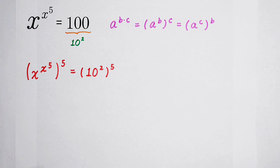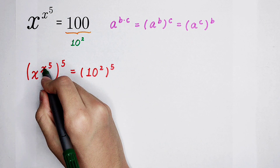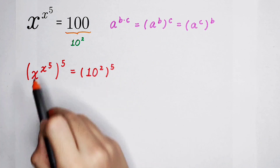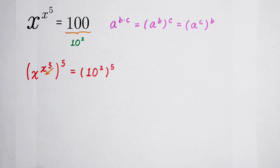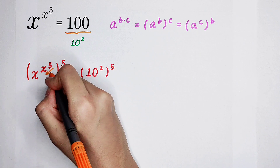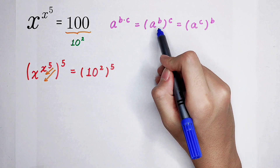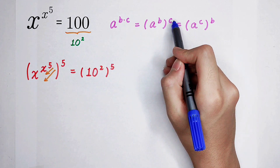Very good. For our following steps, we should use this formula again and again. We have x to the power of x to the power of 5, and then all to the power of 5. Now, you have to know the order to calculate. For the base, we should calculate x to the power of 5 first, and the exponent of x is x to the power of 5. That means we should calculate x to the power of 5 first, and then raise it to the base x. Now, the left-hand side is the form a to the power of b, all to the power of c, where a is x, b is x to the power of 5, and c is this 5.